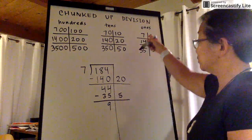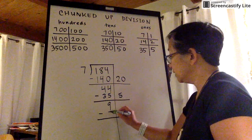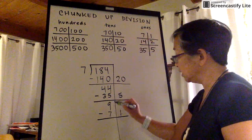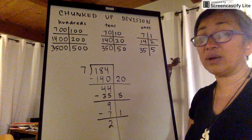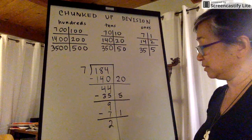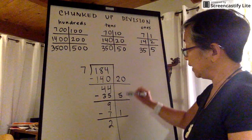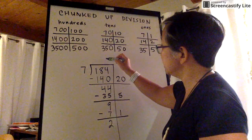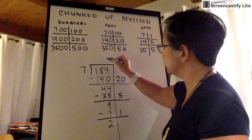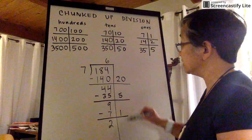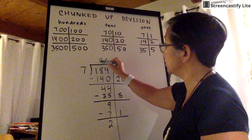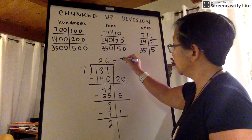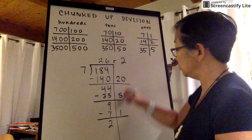I can still subtract the 7. So I write the 7 on the left and the 1 on the right. And 9 minus 7 is 2. And now I can't subtract anything else. I climb up the ladder and I get 26. The number in the ones place I put above the other numbers in the ones place, and the number in the tens place I put above the other numbers in the tens place. And I put my remainder — r for remainder — 2 next to it.